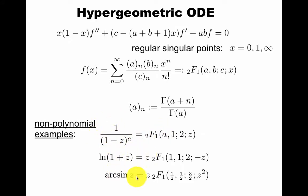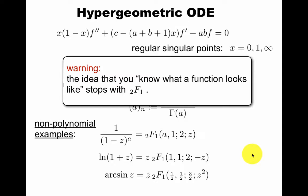So this already captures a lot about how we usually solve ODEs, but not just polynomials. Now we have examples like one over one minus z to the a, where a is some number. We have log, we have arcsine, so we capture a lot of elementary things by this single function. Of course, the idea that you know what a function looks like stops with this, because these functions don't look anything like each other and they're captured by the same function.